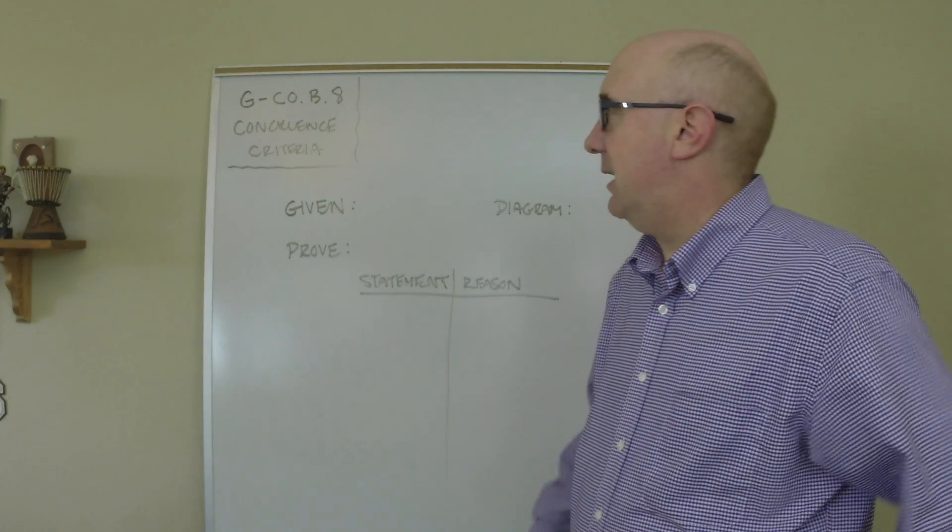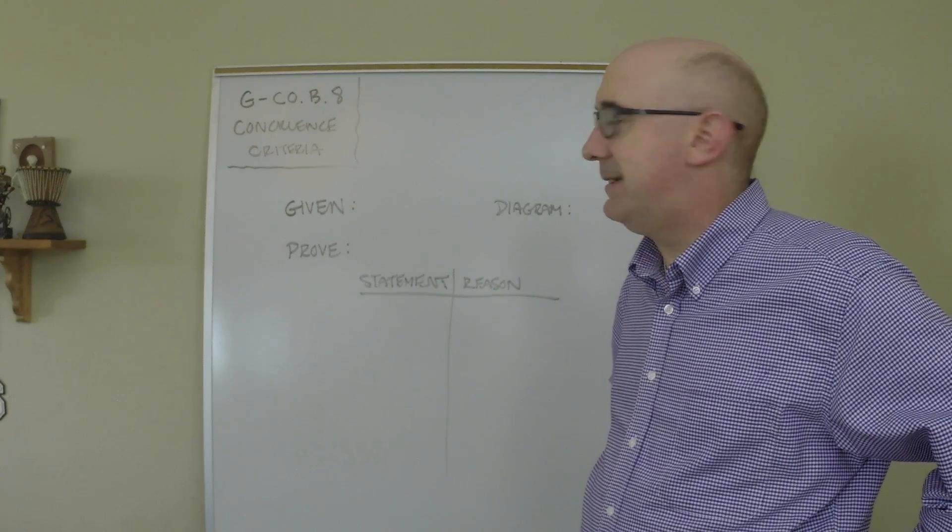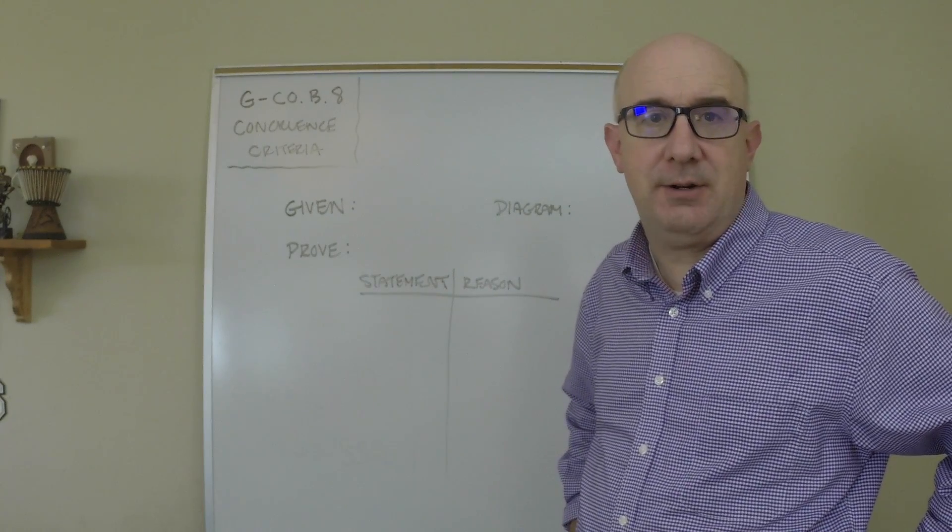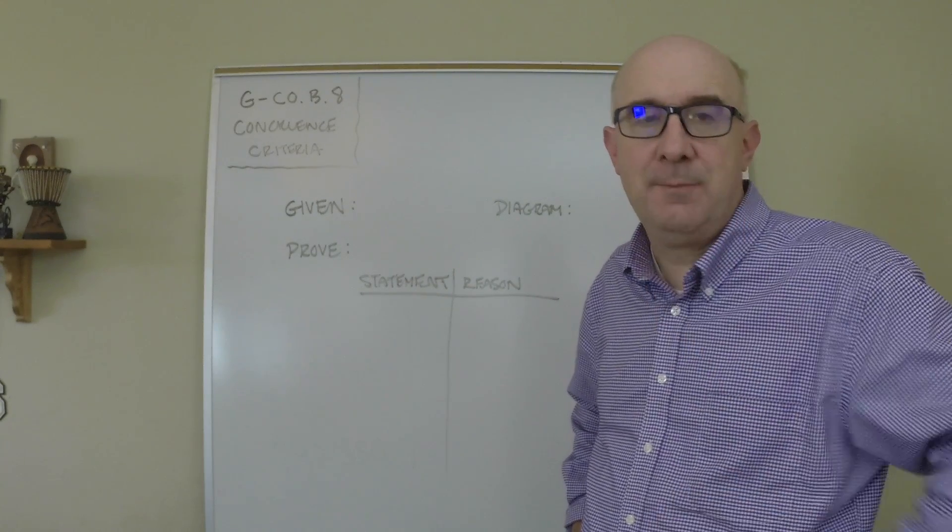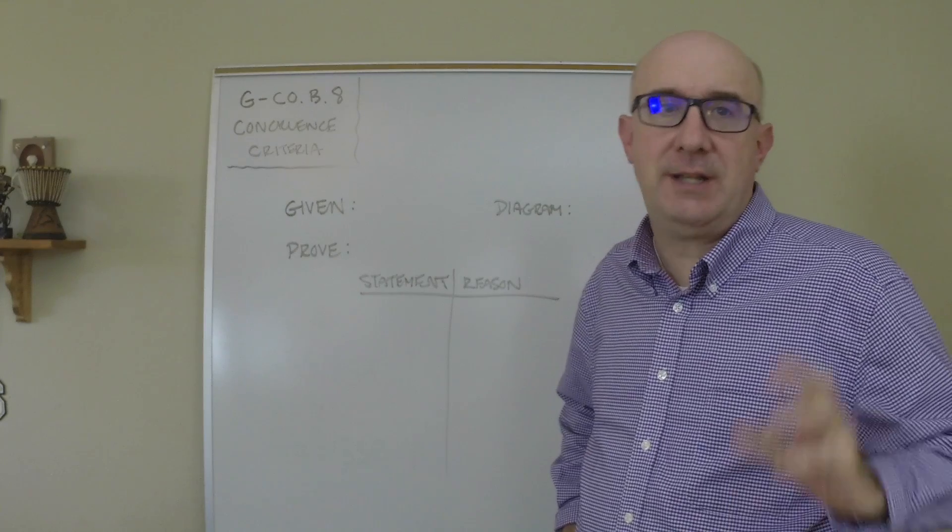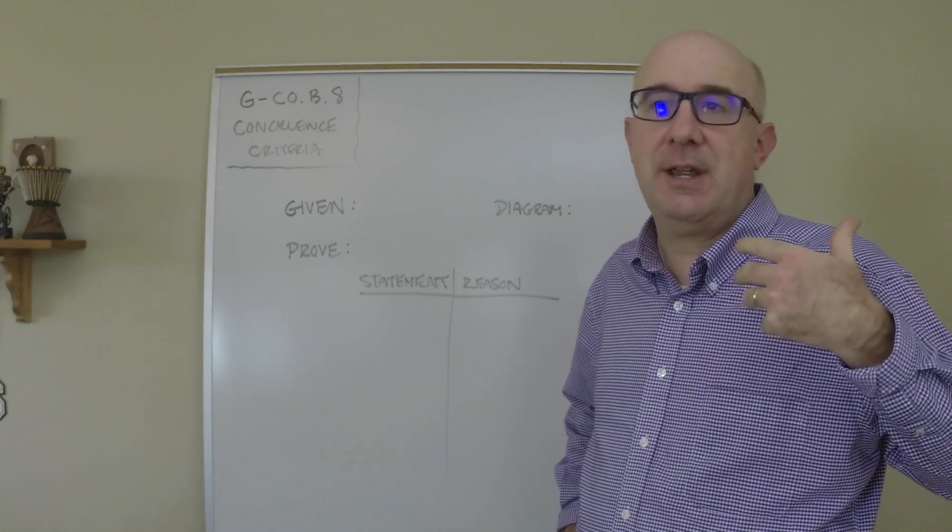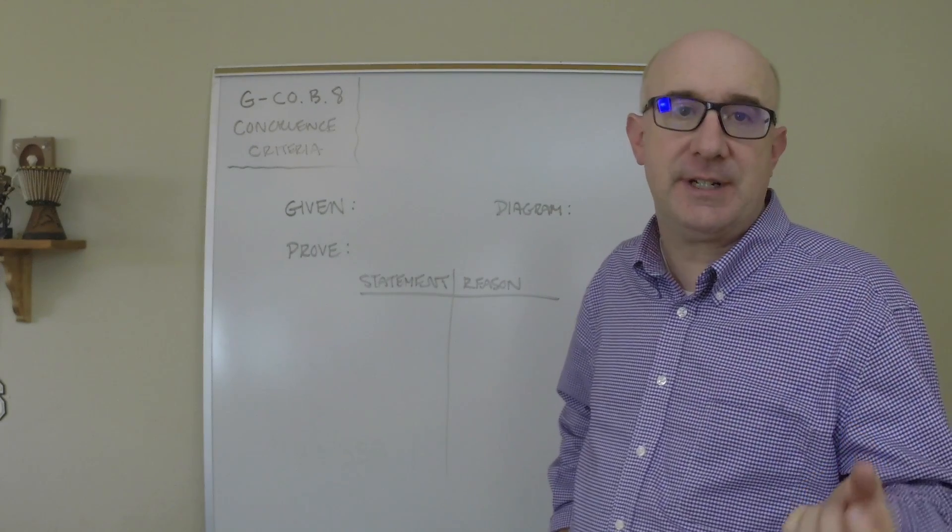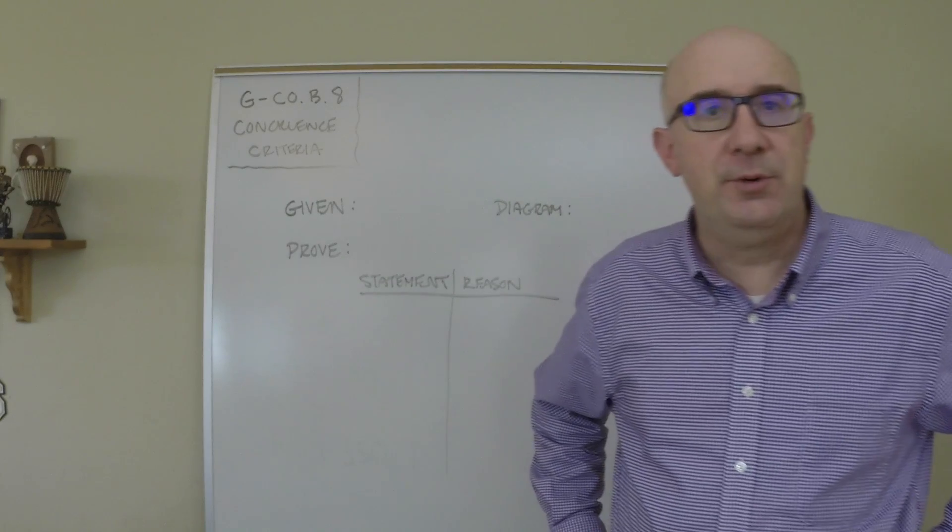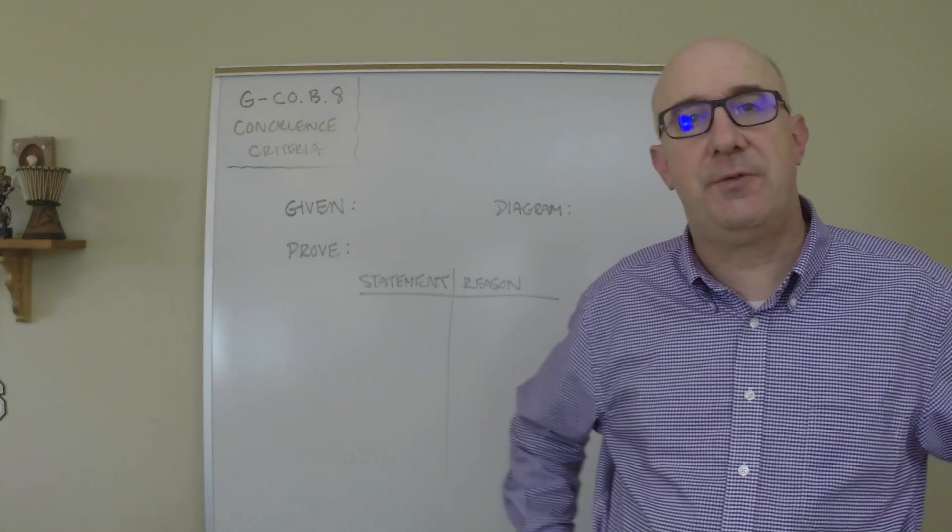I want to take a look at GCOB8, this congruence criteria, but look at worksheet number two here. This is where we take the criteria and not just identify it, but physically prove it. Now, we've already begun proof in geometry so far.